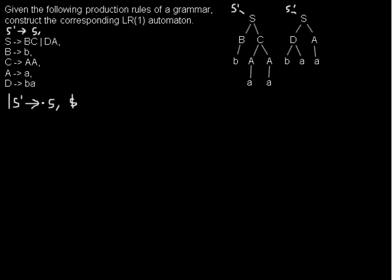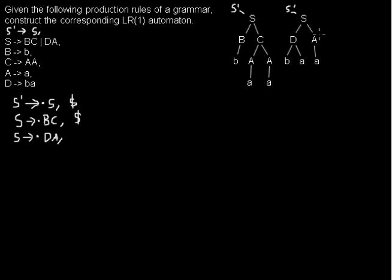Now we predict for S. We have two rules: S → •BC with a dollar sign as the lookahead, since behind that S there's the dollar sign. We also use the other rule for prediction: S → •DA, again with the end-of-word dollar sign as the lookahead.